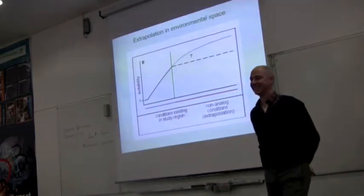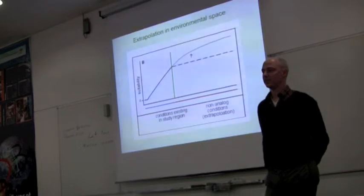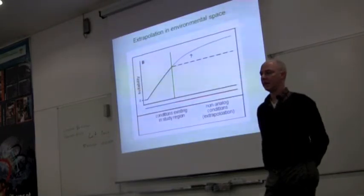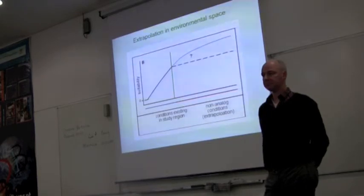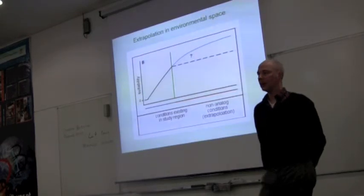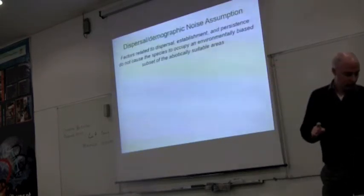I have one practical question. MaxEnt has a fade by clamping option. Can you explain to us what that means? We'd have to look in the documentation because I know you can turn clamping on or off, but the fade option I don't know off the top of my head.